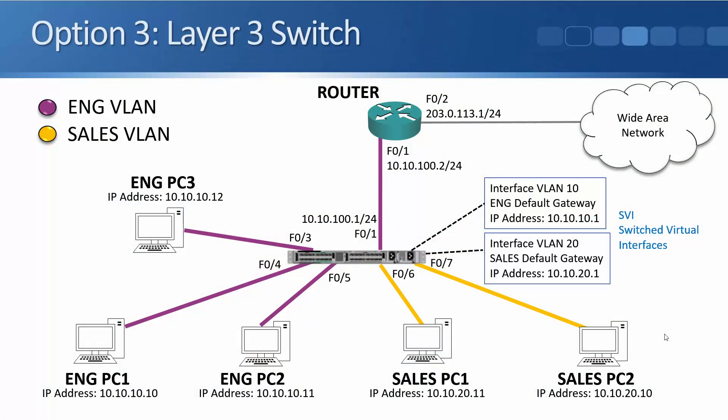Looking at our lab topology, it's the same as before where we've got a switch with both engineering and sales PCs plugged into it. We've split that into an engineering and a sales VLAN, with engineering PCs in access ports for the eng VLAN, and sales PCs configured on access ports for the sales VLAN. The PCs can communicate within their own VLAN, but because the two VLANs are in different IP subnets — eng is using 10.10.10 and sales is using 10.10.20 — we need to configure routing between them.